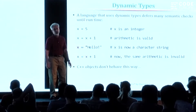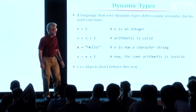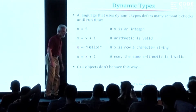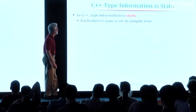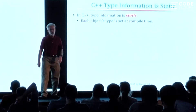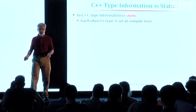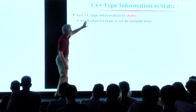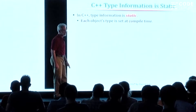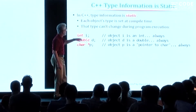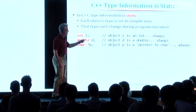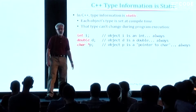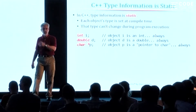My point is: C++ isn't like that. In C++, the type information is almost exclusively static, meaning it's processed at compile time. When you declare an object, you set its type and that's it. That type can't change during execution, so an int is always an int, a double is always a double, and a pointer is always a pointer. There's nothing you can assign to it that changes that nature. That's a statically typed language.